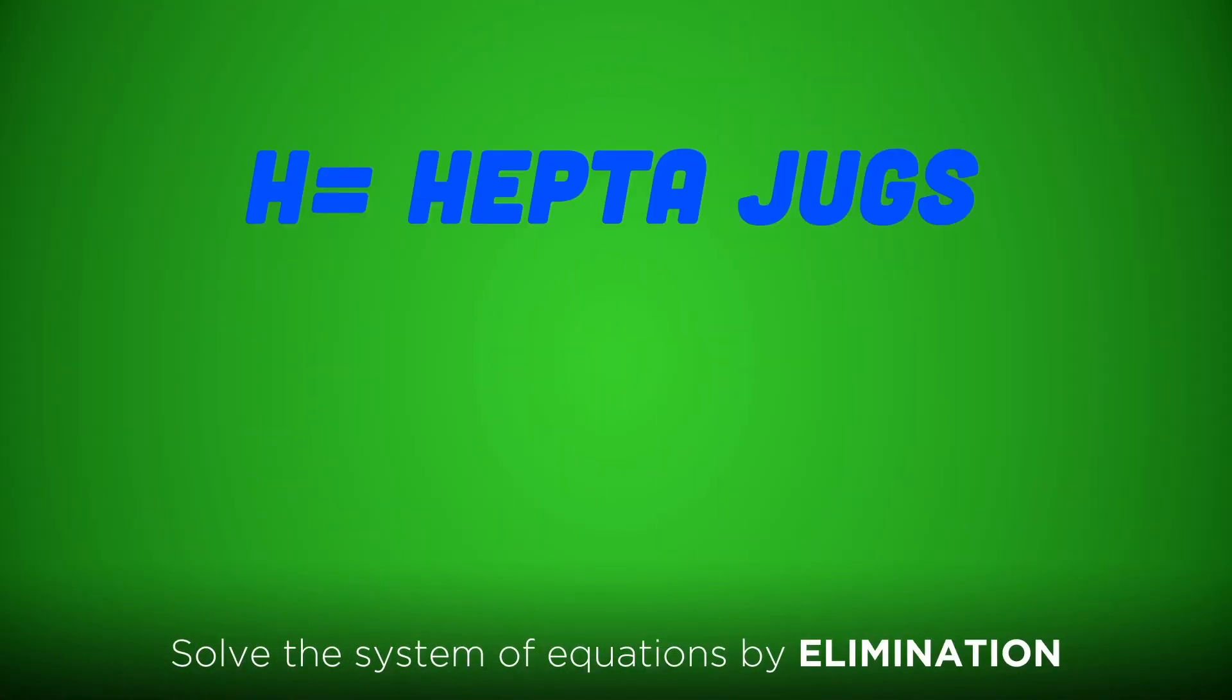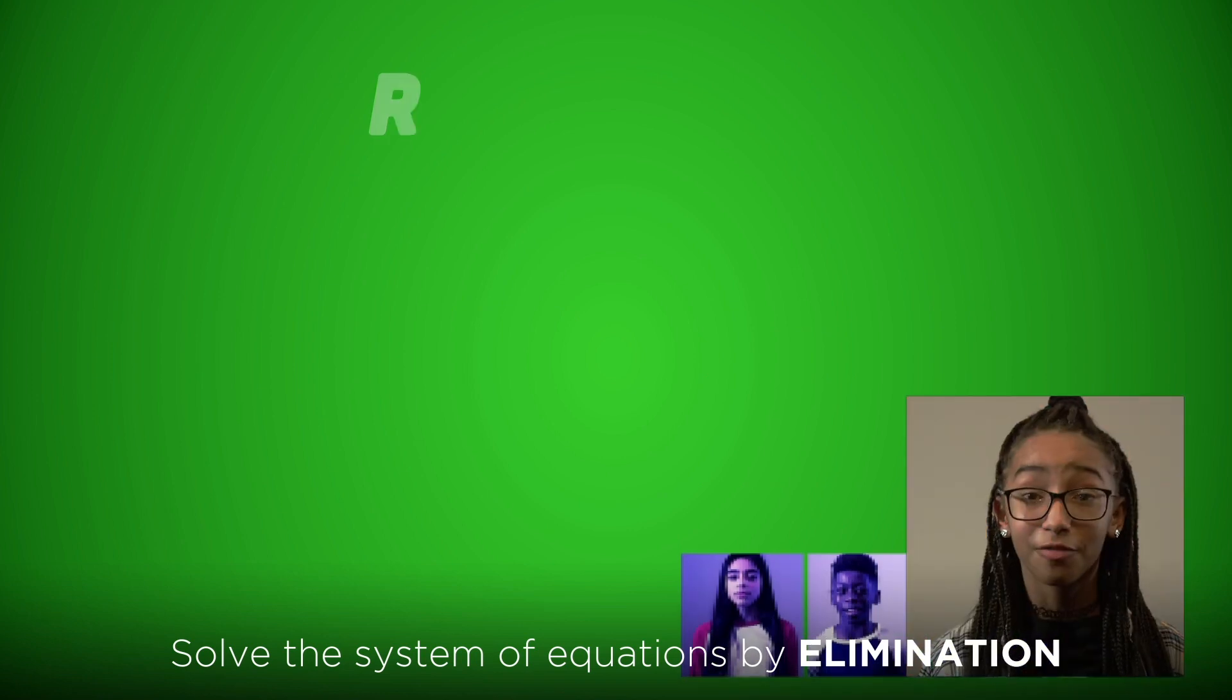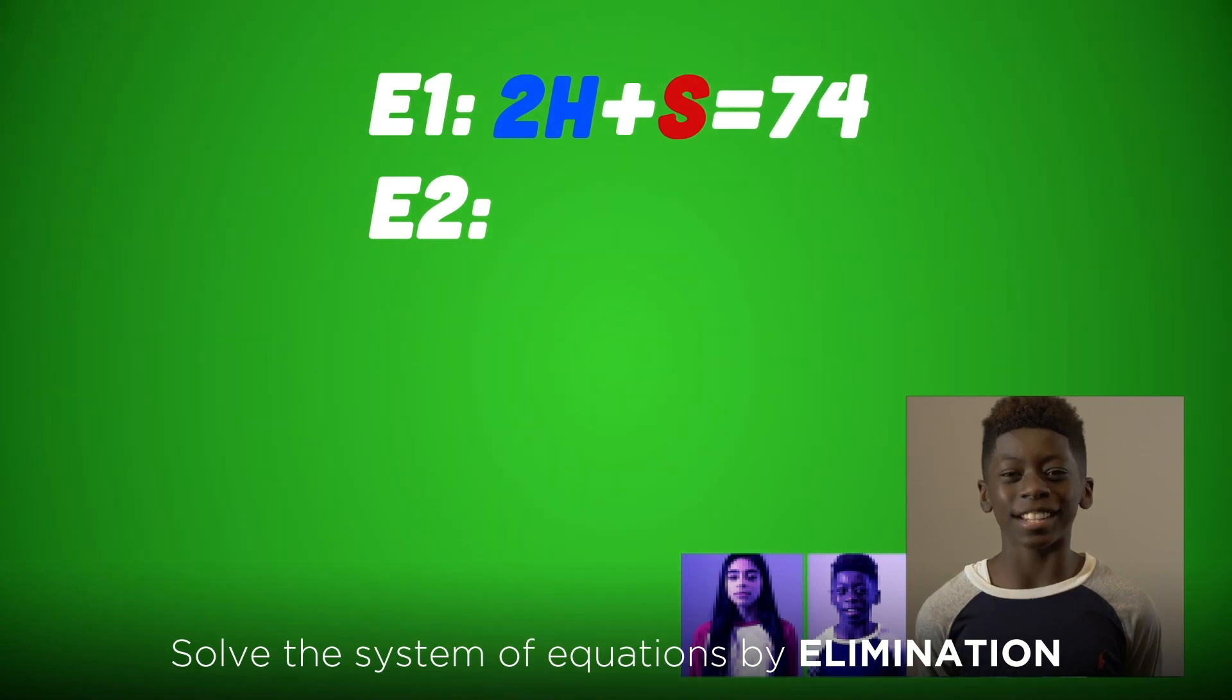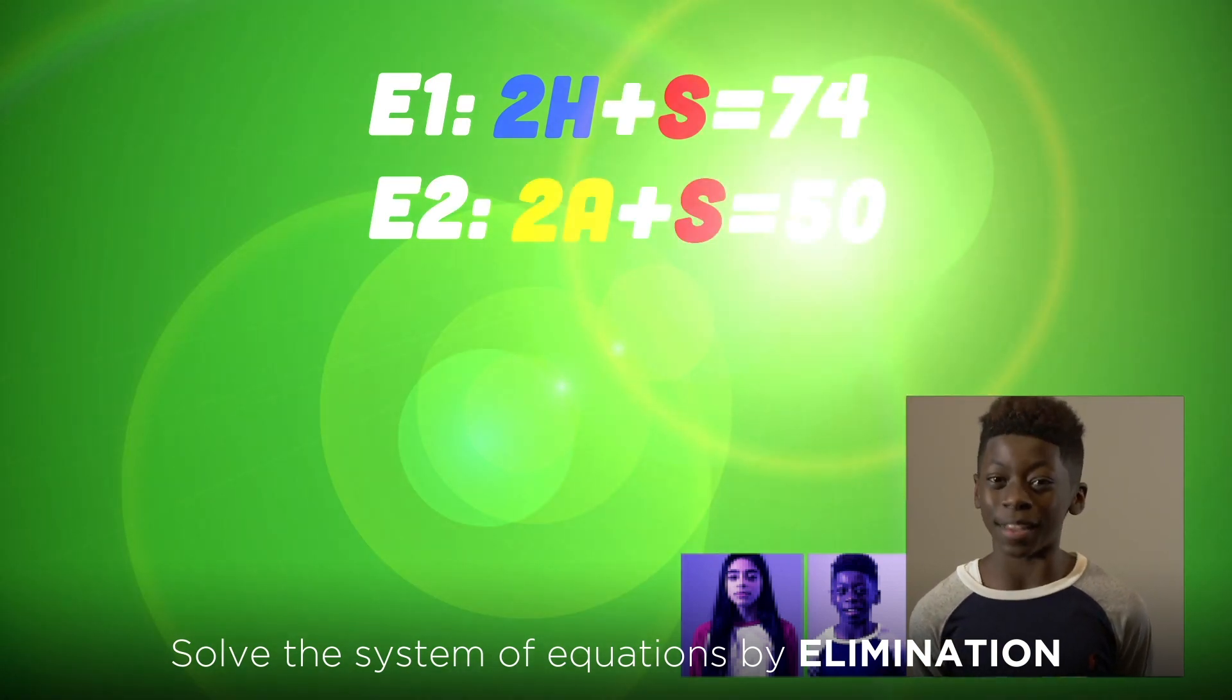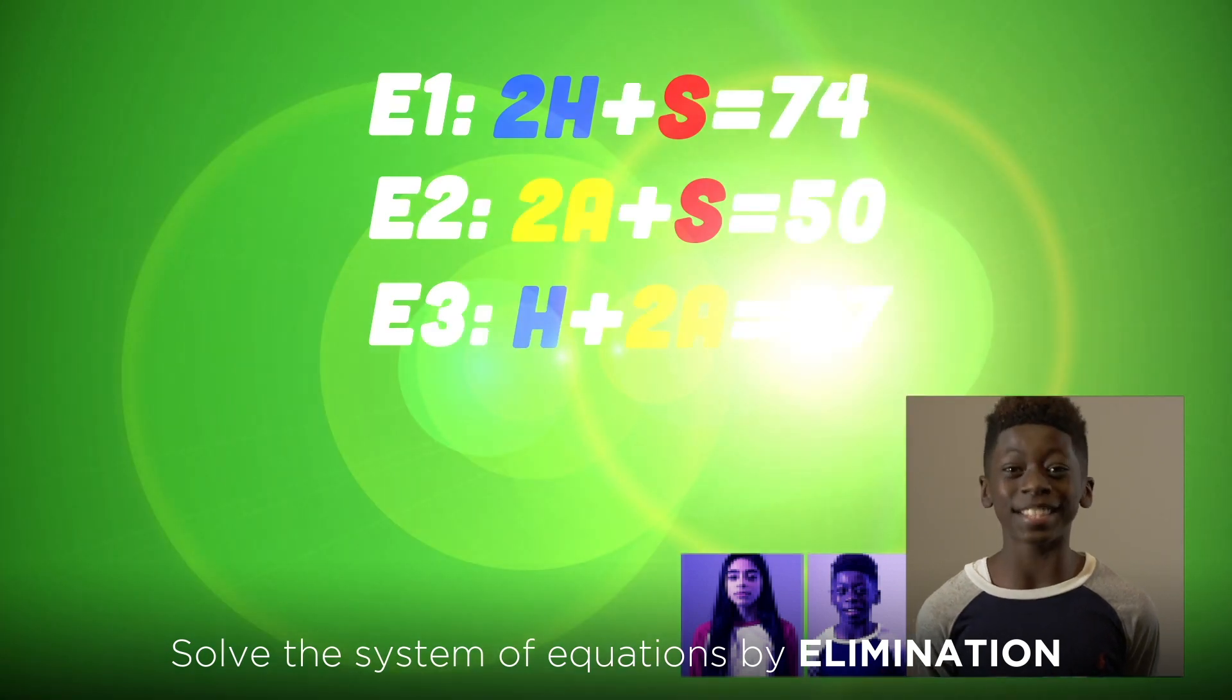Let's make HEPTA jugs H, Algeforts A, and Slow Pots S. We know that our first equation is 2H + S = 74 V-Bucks. And our second equation is 2A + S = 50 V-Bucks. And our third equation is H + 2A = 57 V-Bucks.